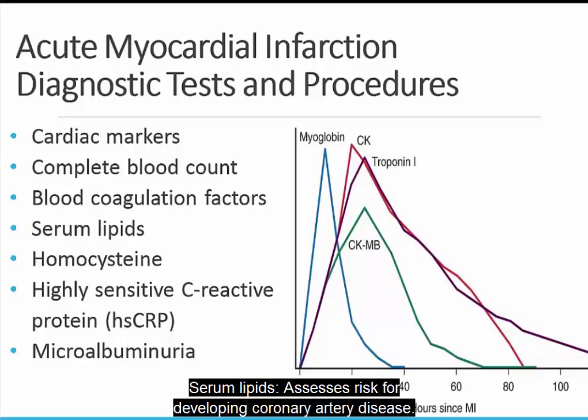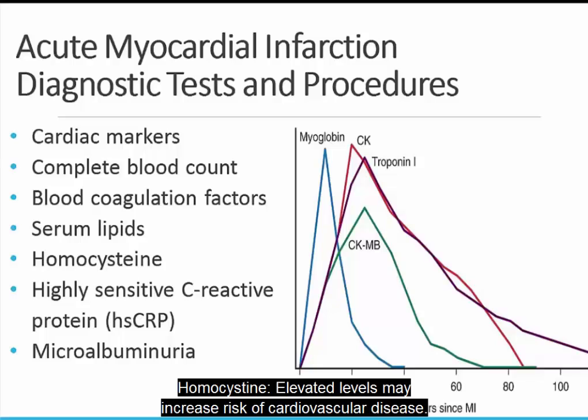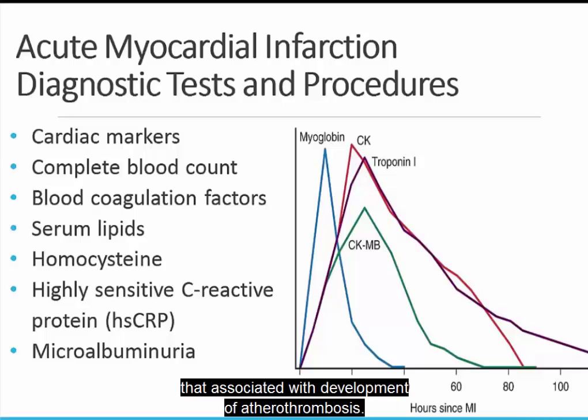Serum lipids assess risk for developing coronary artery disease. Homocysteine: elevated levels may increase risk of cardiovascular disease. Highly sensitive C-reactive protein detects inflammatory processes such as those associated with the development of atherothrombosis.